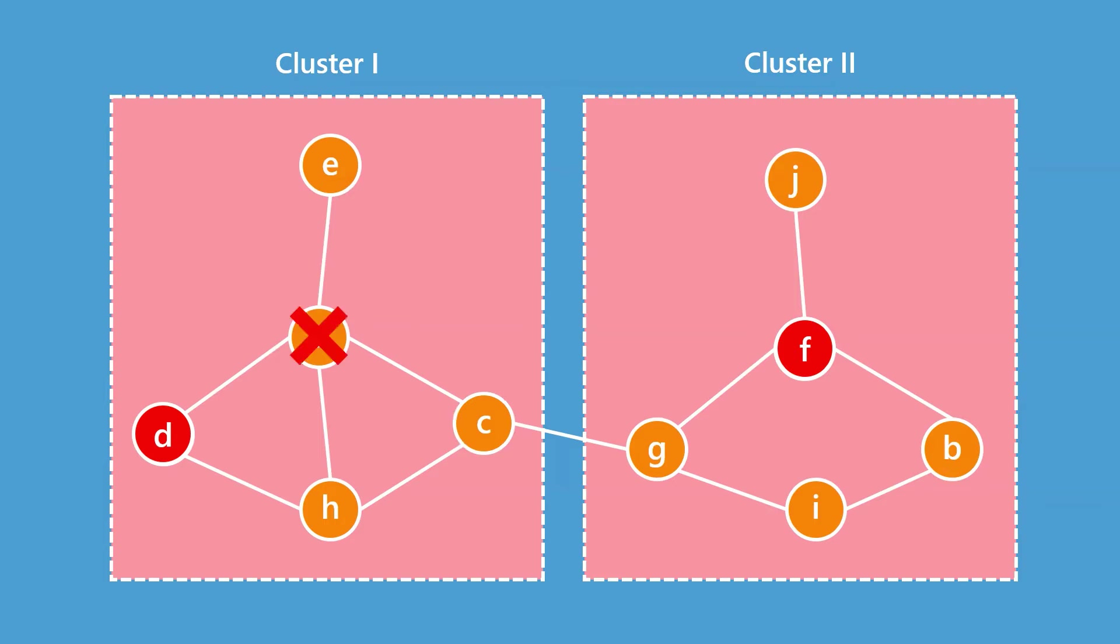The virus does not necessarily have to go through A since there are a few paths, but it has to go through C and G. Without C or G, the two clusters would be completely separated.